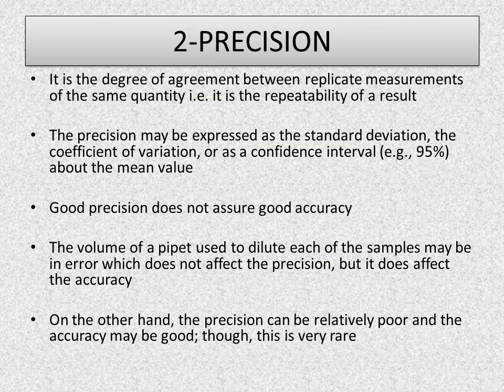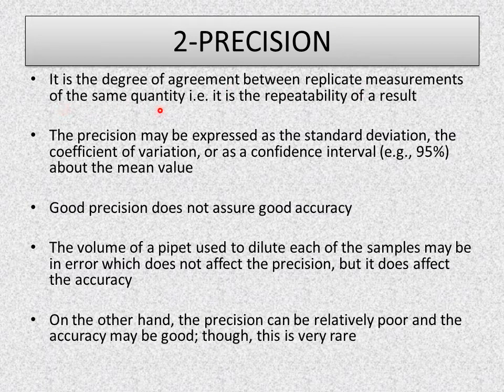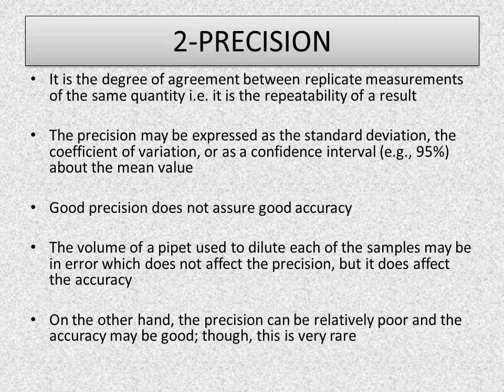The second factor is precision. It is the degree of agreement between replicate measurements of the same quantity — that is, the repeatability of a result. In chemistry, whenever we perform an experiment we prefer to perform it in different replicates, for example three times. How close those three values are to each other is called precision.